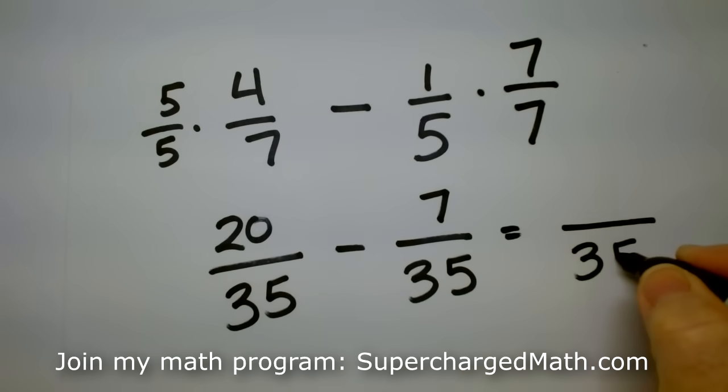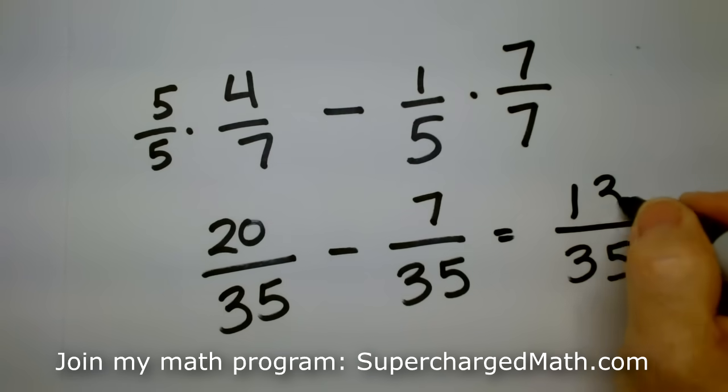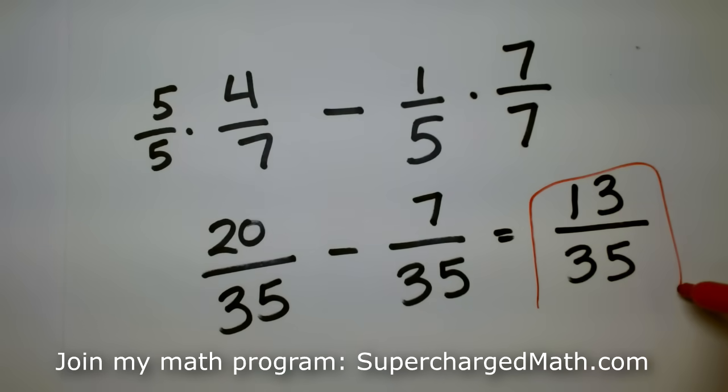So write down thirty-five on the bottom. And twenty minus seven, that is thirteen. And I can't reduce it anymore. Thirteen is prime. And thirty-five, it doesn't have thirteen as a factor. So there's your final answer.